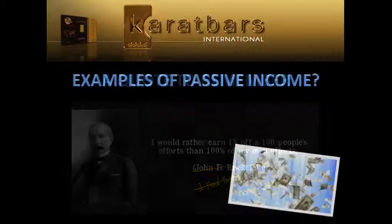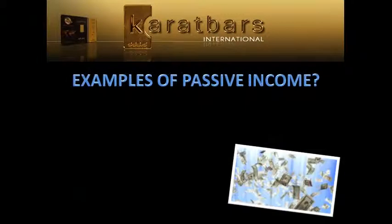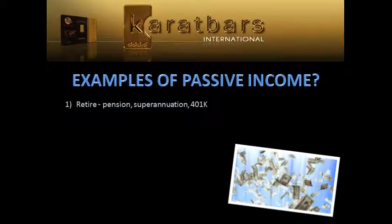Let's look at some examples of passive income. One you probably hadn't thought about: when you retire and the government looks after you, that's a pension — you're likely to get around $500 a week without working for it anymore, so it could be regarded as passive or residual income. Superannuation, as we call it in Australia and New Zealand — or a 401(k) in the States — is your money or your employer's money put in over the years, and you get it back when you retire. You might get maybe $1,000 to $2,000 a week out of that if all goes well.